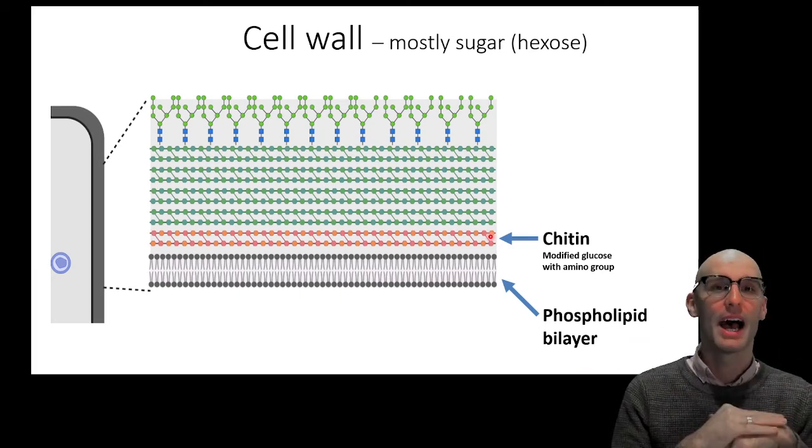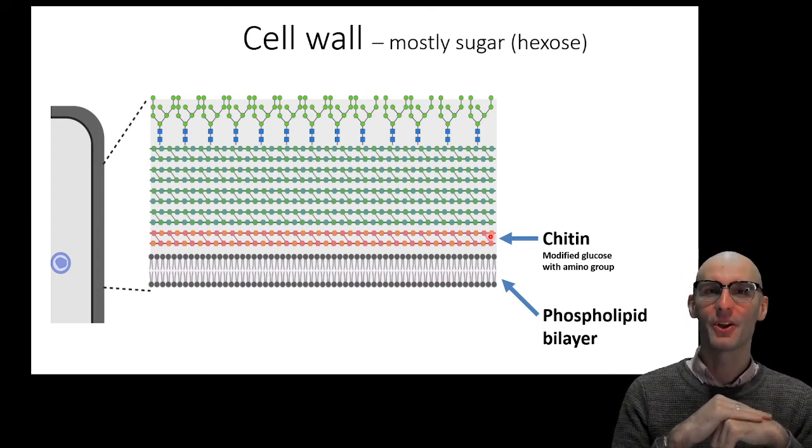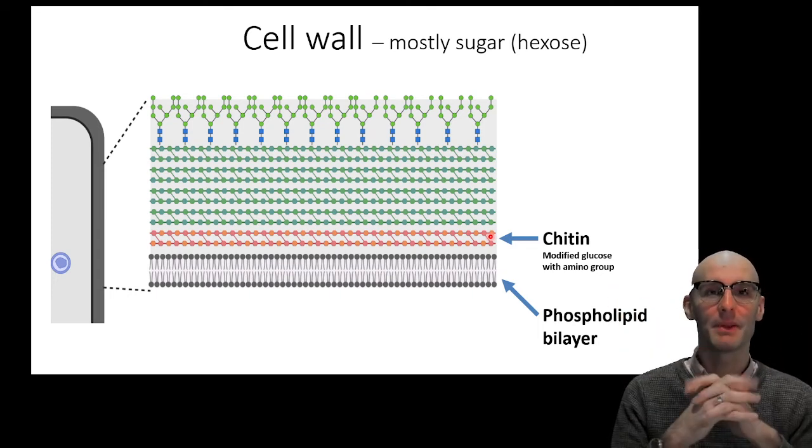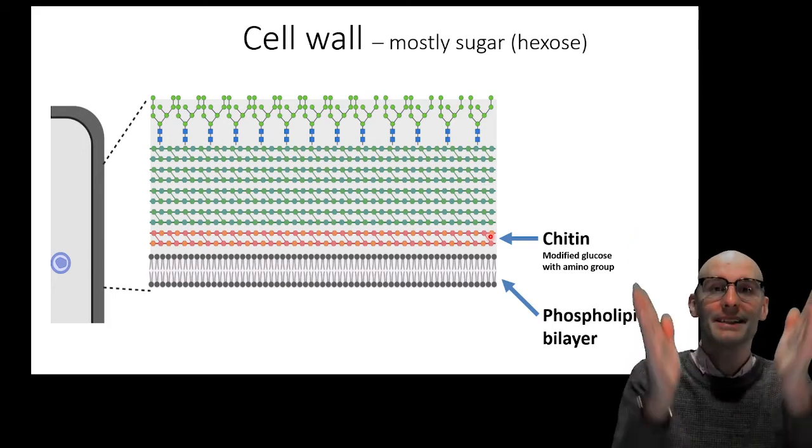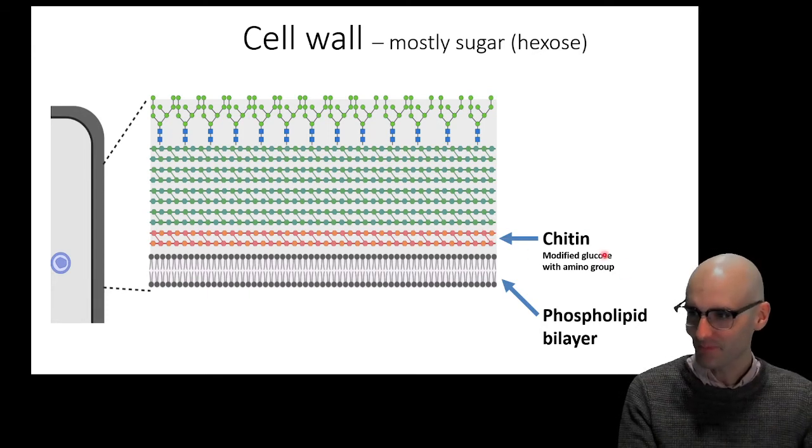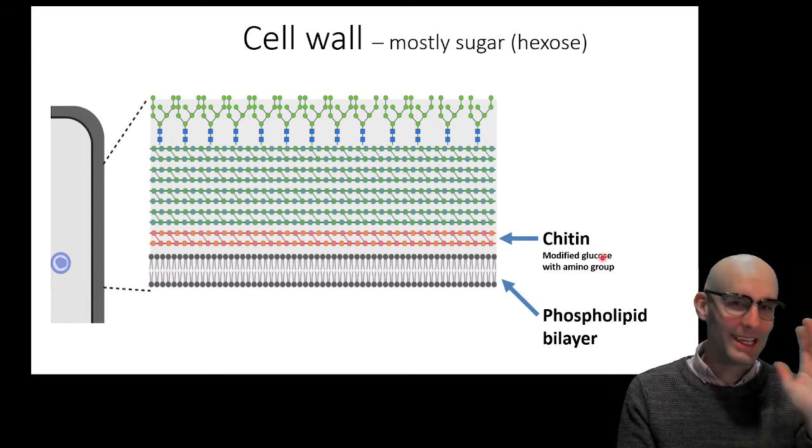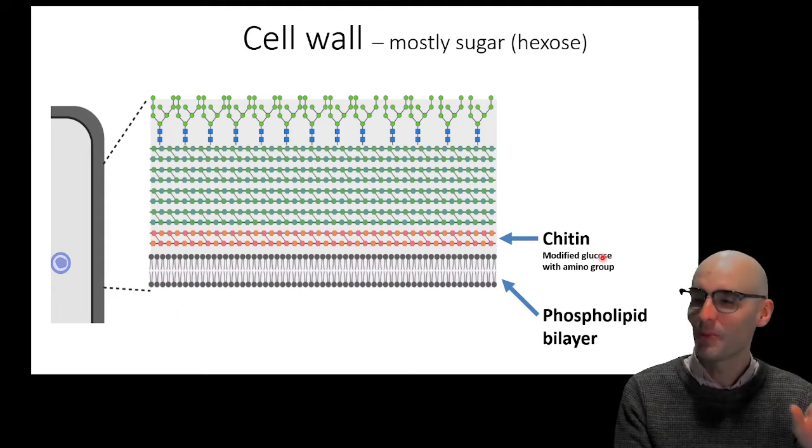But also beetles, the hard shell of beetles, is made out of chitin. And so there does seem to be some use in the animal kingdom. And it seems to have come from the common ancestor of fungus and the animal kingdom. So key thing there is if you're a fungus, you have chitin. So it's a compulsory thing.